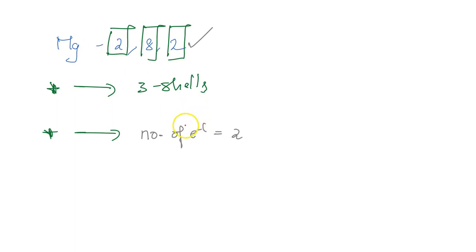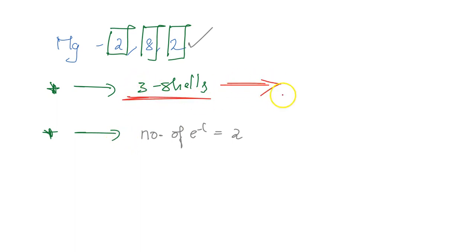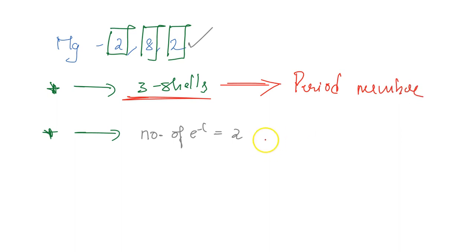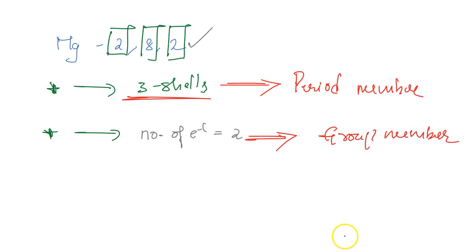If you know these two things you can determine the position. The number of shells is equal to the period number to which the element belongs, and the number of valence electrons is equal to the group number. However, there is an exception to this that you have to remember — I will tell you the exception in a while.